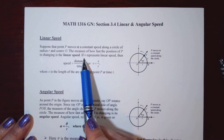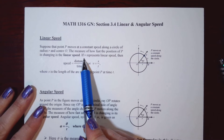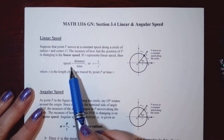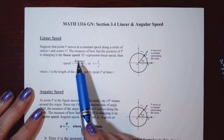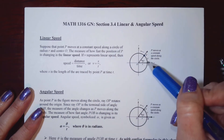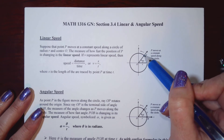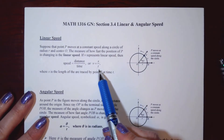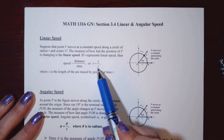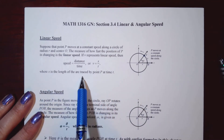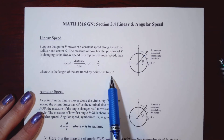If V represents linear speed — we usually think of V as velocity, which is speed with direction — we're going to use V to represent linear speed here. Speed equals distance divided by time, where the distance is the arc length S that point P travels over time T. So S is the arc length traced by point P at time T.